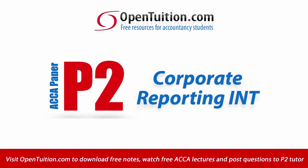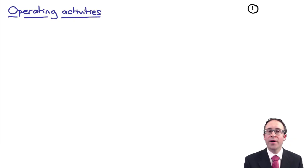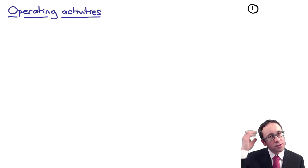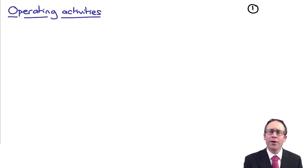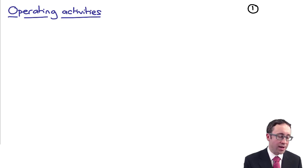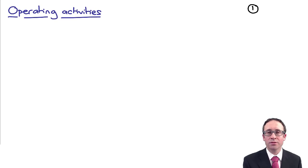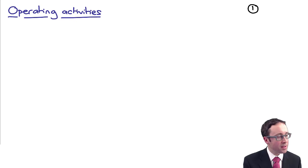This is a lecture from OpenTuition. To benefit from the lecture, you should download the free lecture notes from OpenTuition.com. Hopefully you've gone through and looked at the first video covering the basic approach for a group statement of cash flows, and also seen a brief introduction to the question we're going to look at now — the March-June 2016 sample question called Western.